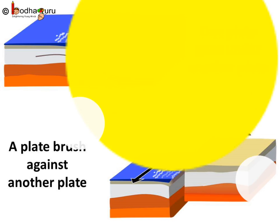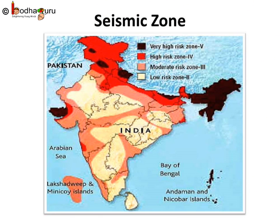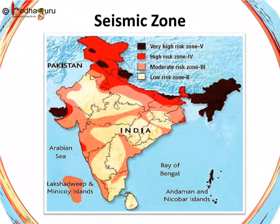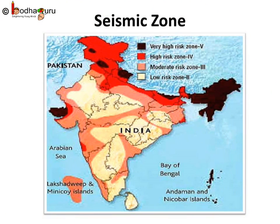This disturbance is the earthquake. So the boundaries of these plates are denser zones where earthquakes are more likely to occur. Such weak zones are called seismic or fault zones. Look at the map — the brown zones are seismic zones where an earthquake may occur any time.